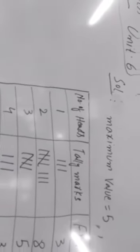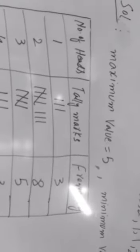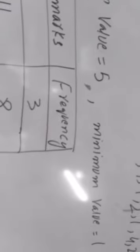A coin is tossed 20 times and the number of heads is recorded. First step: we find the maximum value and minimum value. The maximum value is 5 and the minimum value is 1. Then we draw a table with three columns: first column is Number of Heads, second column is Tally Marks, and third column is Frequency.